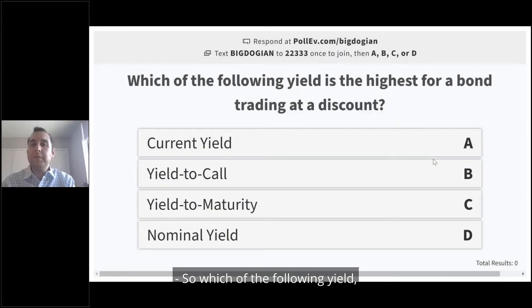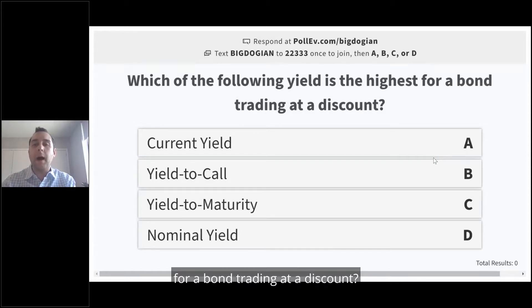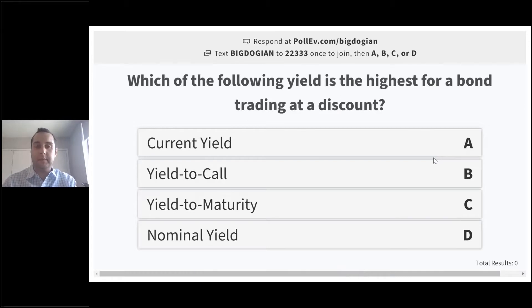Which of the following yields is the highest for a bond trading at a discount?